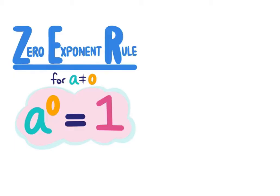Another important rule is called the zero exponent rule. It's really easy because you're basically taking your base and raising it to the zero power. The zero power just means that it's going to turn to 1. So it doesn't matter what number or letter you are raising to the zero power, it will always equal 1. For example, if I had 50 to the zero power, that would equal 1. 3,000 to the zero power would equal 1. x to the zero power equals 1. It doesn't matter how crazy it is — if it's raised to the zero power, it's going to equal 1.